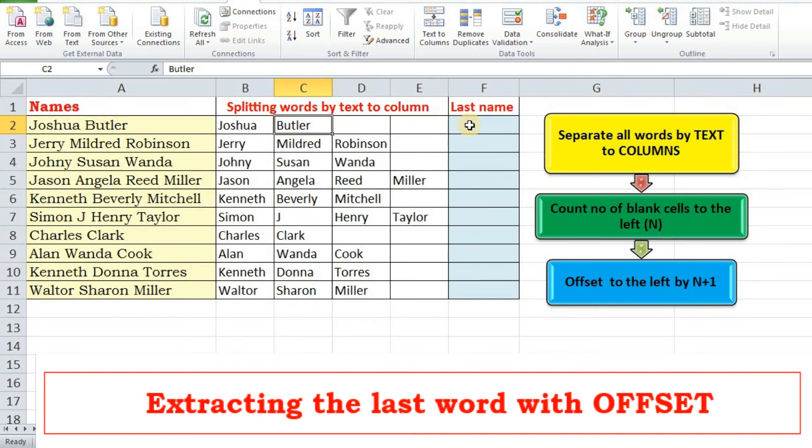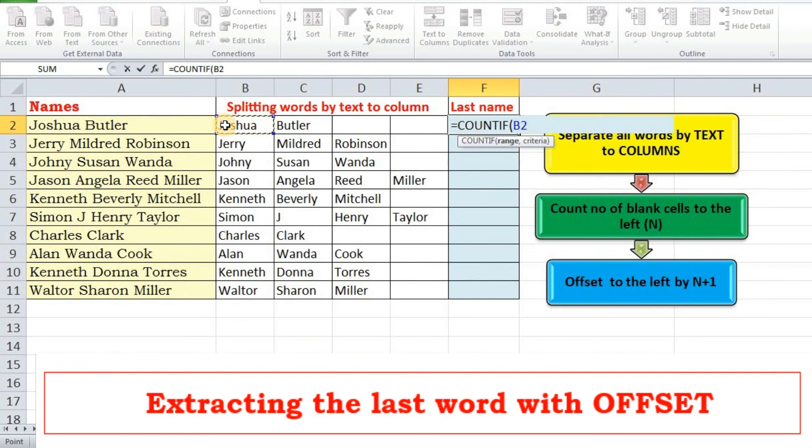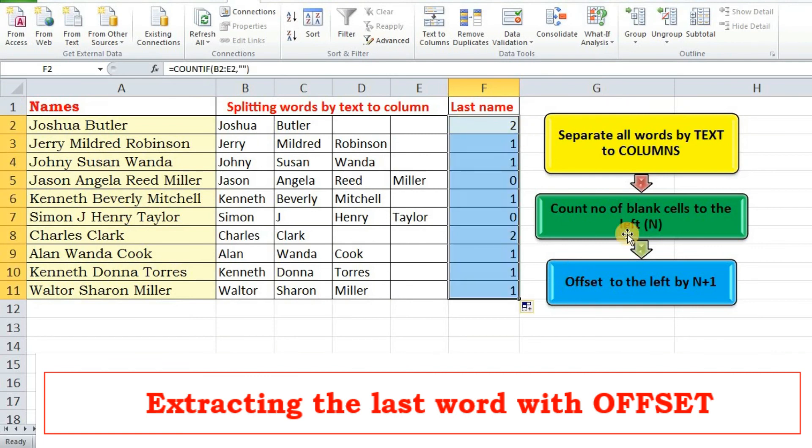So first I need to count the number of blank cells. This will be our range. I am looking for blank cells so I counted number of blank cells. Now I just need to offset with reference to this cell offset by 1, 2, and 3, that is 2 plus 1.